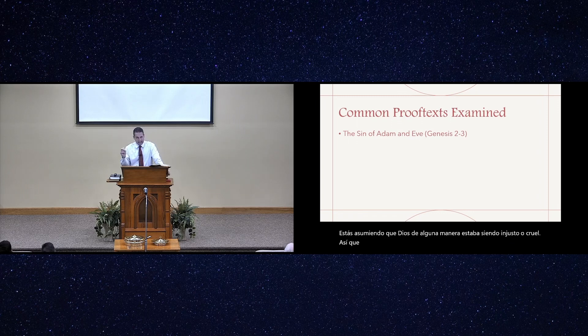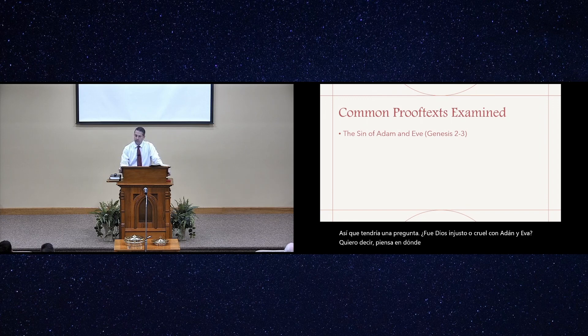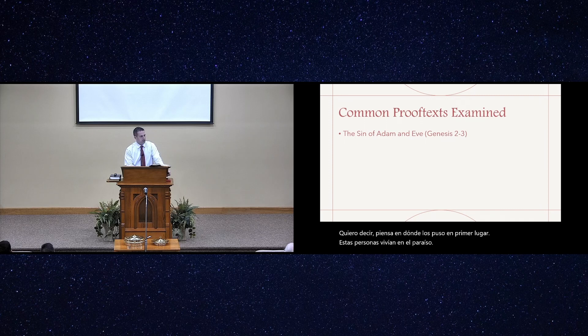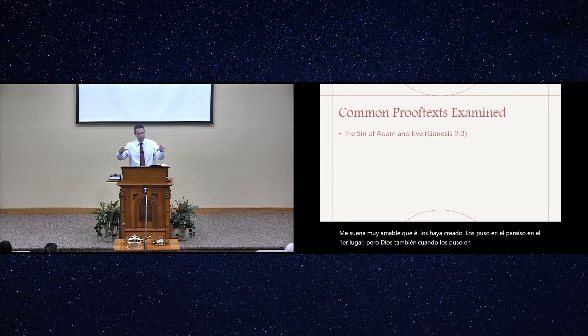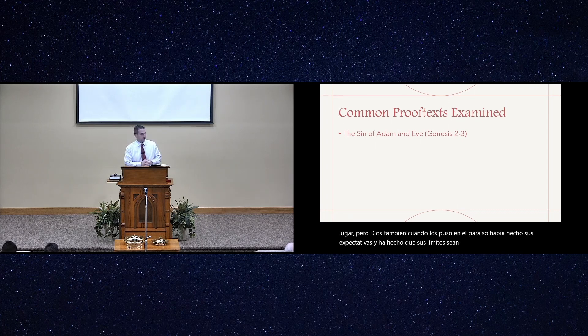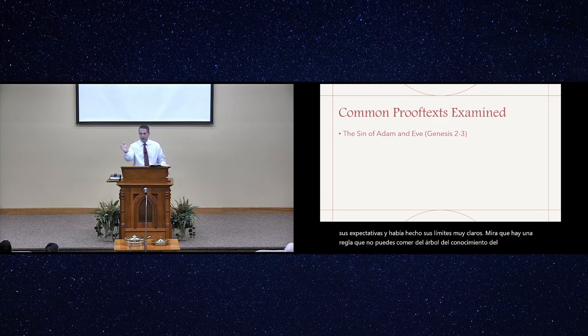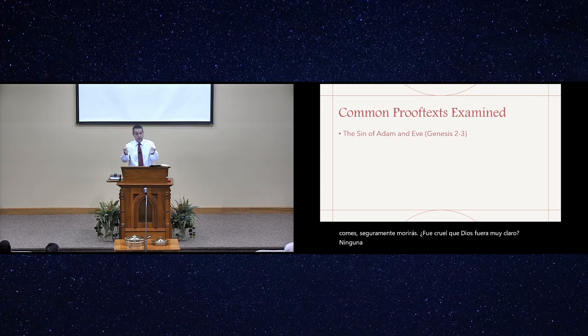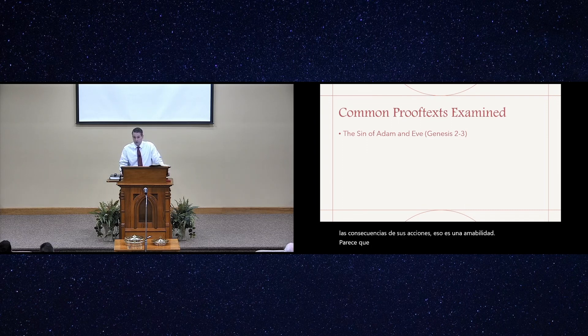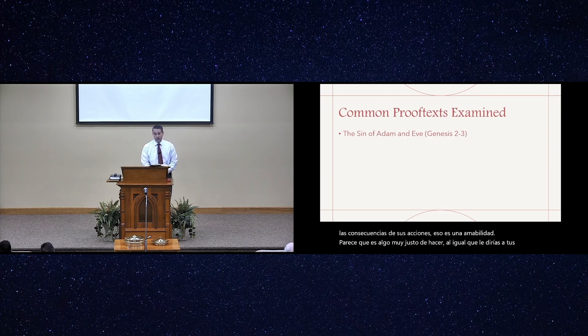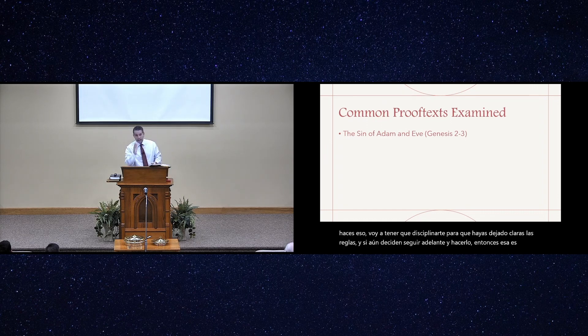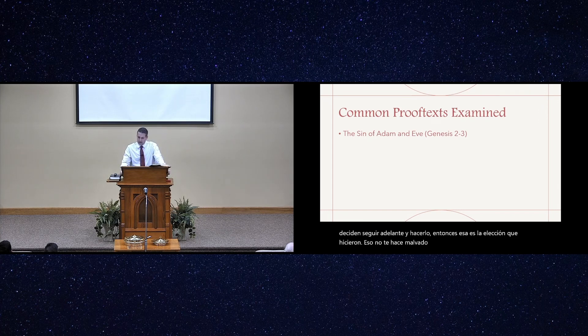But think about this. You're assuming that God was somehow being unjust or unkind. Was God unjust or unkind to Adam and Eve? Think about where he put them in the first place. These people were living in paradise. God also had made his expectations and boundaries very clear. There's one rule: you can't eat of the tree of the knowledge of good and evil. If you eat of it, you shall surely die.